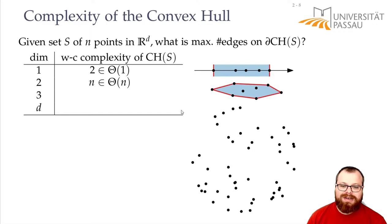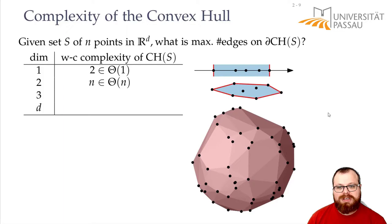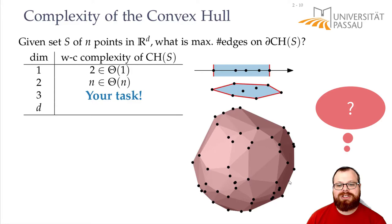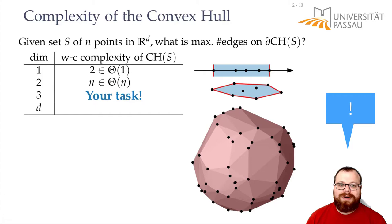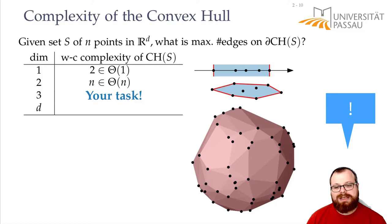If we go to three dimensions, we have a set of points in three-dimensional space — you cannot see this very well here because it's just a 2D drawing. Then the convex hull is a polytope, a convex polytope where all the angles inside are at most 180 degrees, and it's the smallest convex polytope that contains all the points. One elegant way to get the number of edges is to look at the graph spanned by this polytope, with the boundary points as vertices and the polytope's edges as edges. This gives us a planar graph.